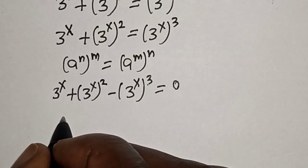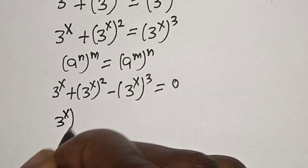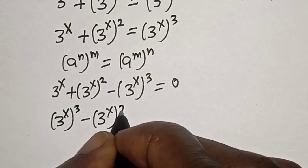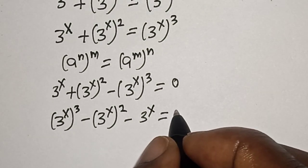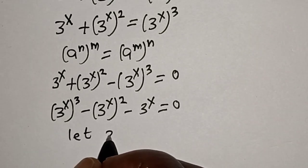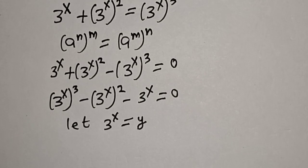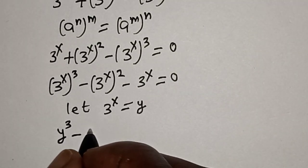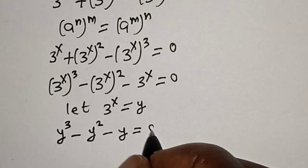Then let's rearrange. We have 3 raised to power s cubed, minus 3 raised to power s squared, minus 3 raised to power s, is equal to 0. Now, from here, let 3 raised to power s equal to y.